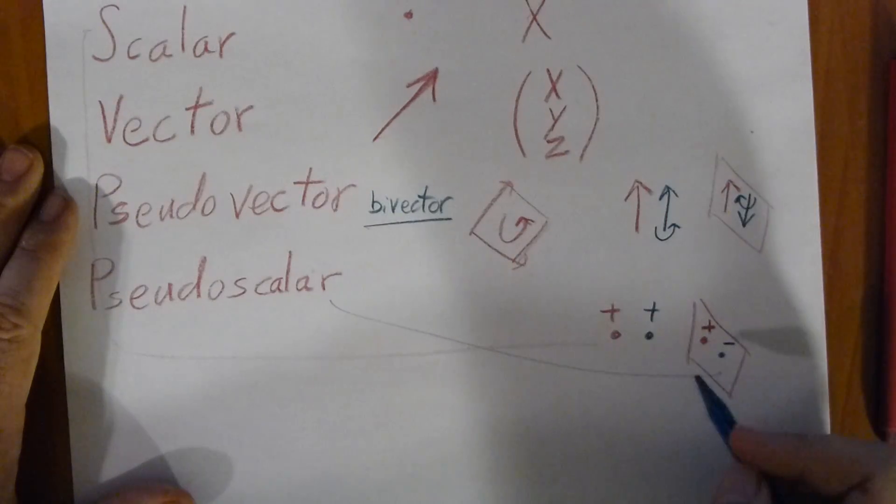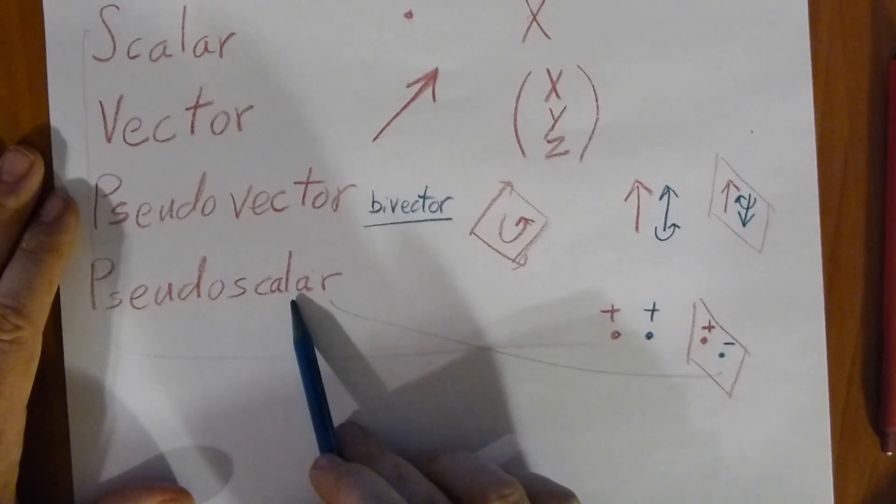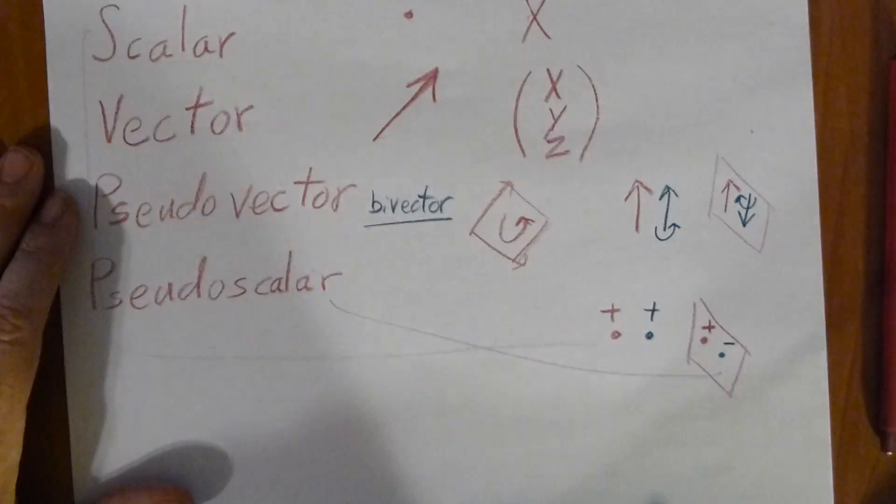This would include things like, for instance, amount of rotation or rotational velocity. Magnetic charge, if it exists, would be a pseudoscalar. It's a little less known, a little less used, but you will come across it and it's important to know.